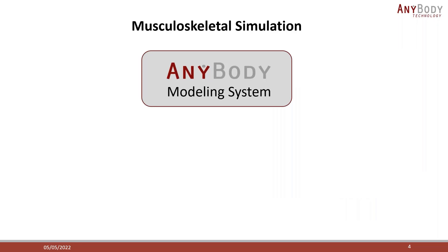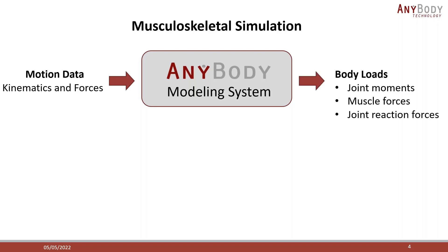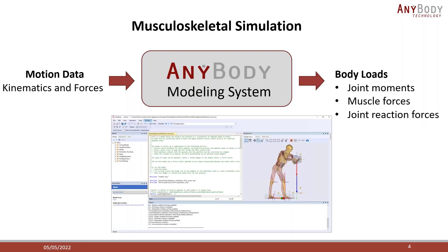So let's begin with having a look at what the Anybody modeling system actually is. The Anybody modeling system is a software that allows you to do musculoskeletal modeling and simulations. As input, it takes motion data as kinematics and forces, and it calculates the internal body loads as joint moments, joint reaction forces and muscle forces. Down here in the bottom of the screen, you can see an actual screenshot from the software, so this can give you an idea of how the system looks.